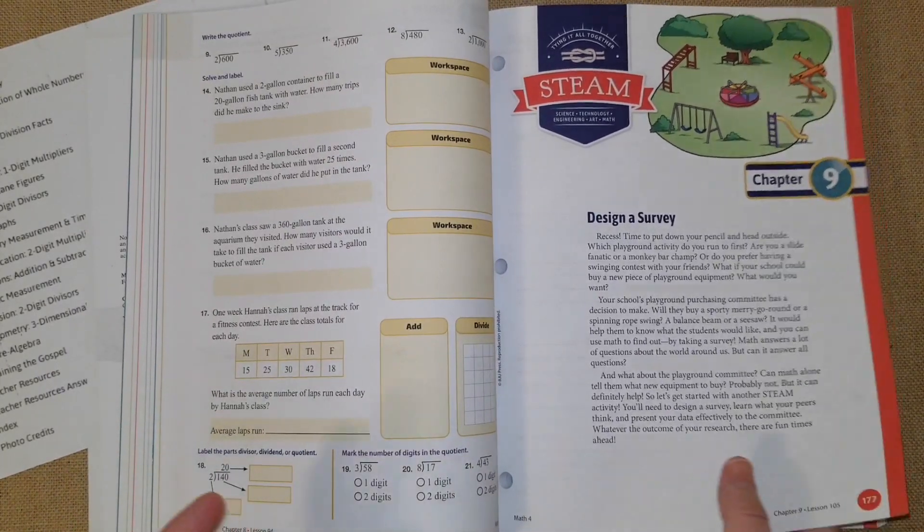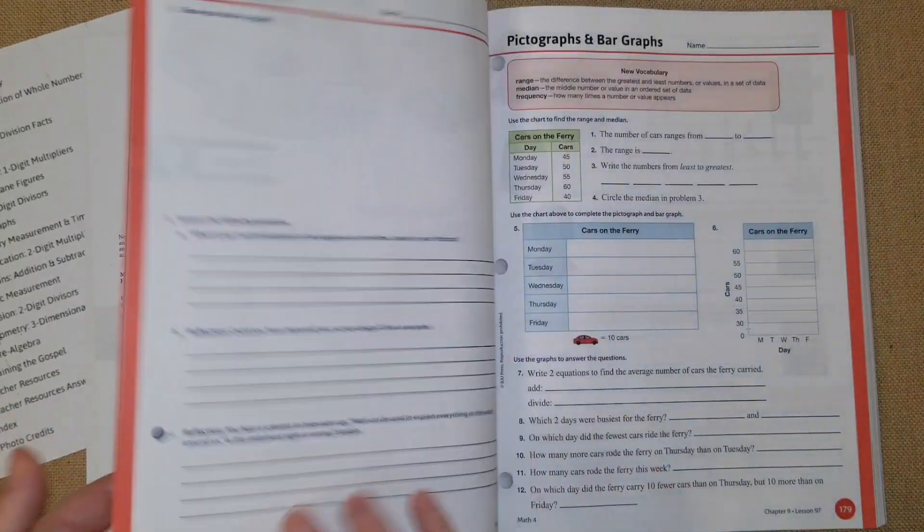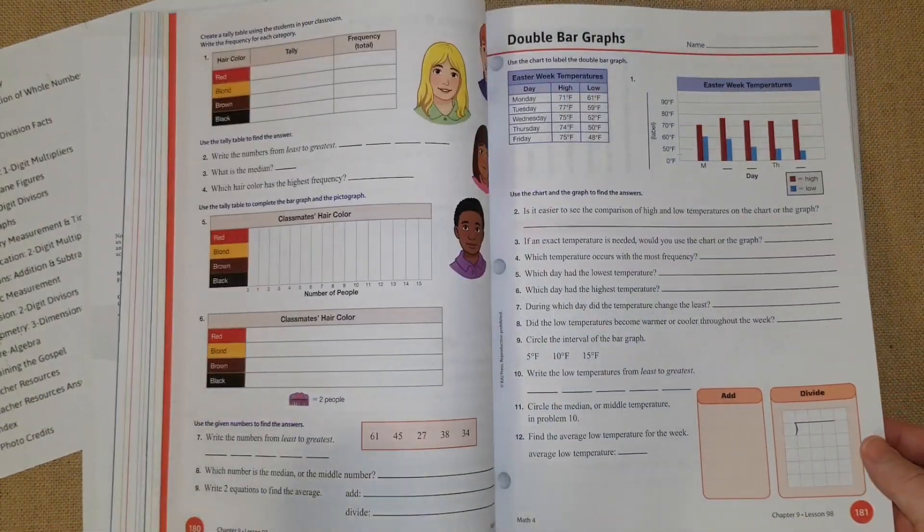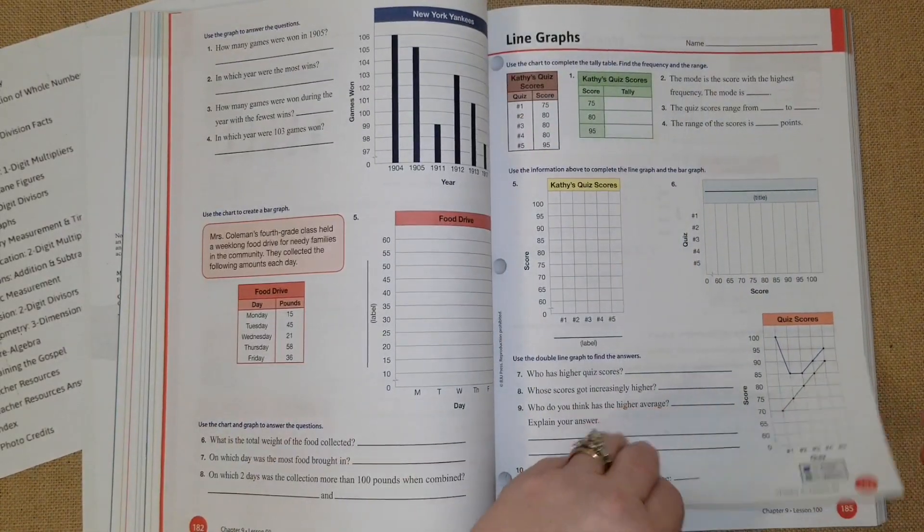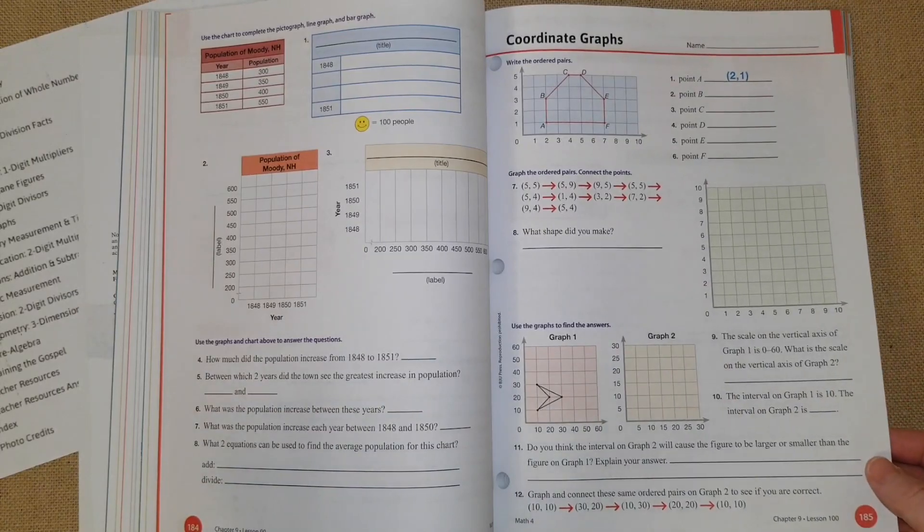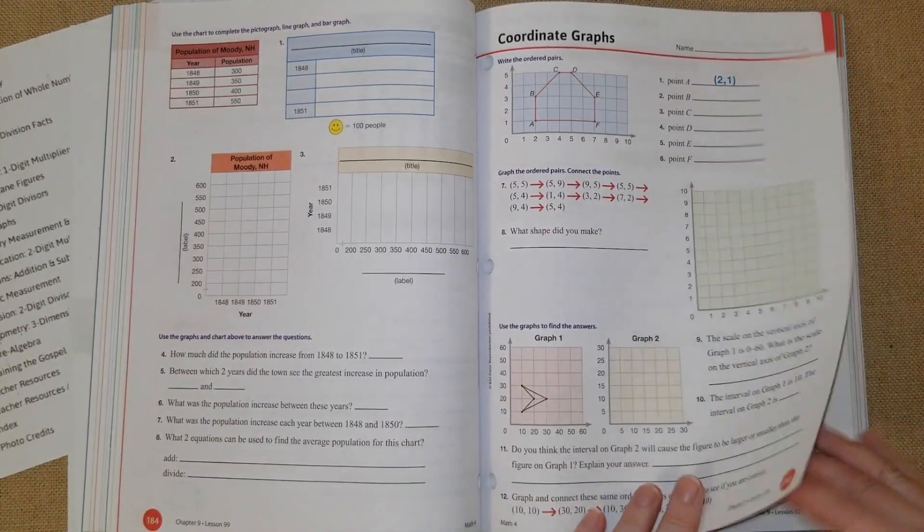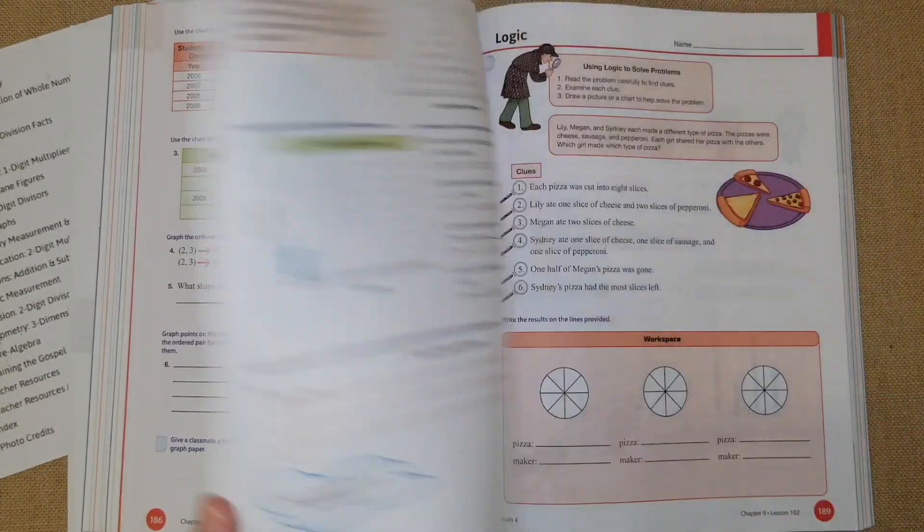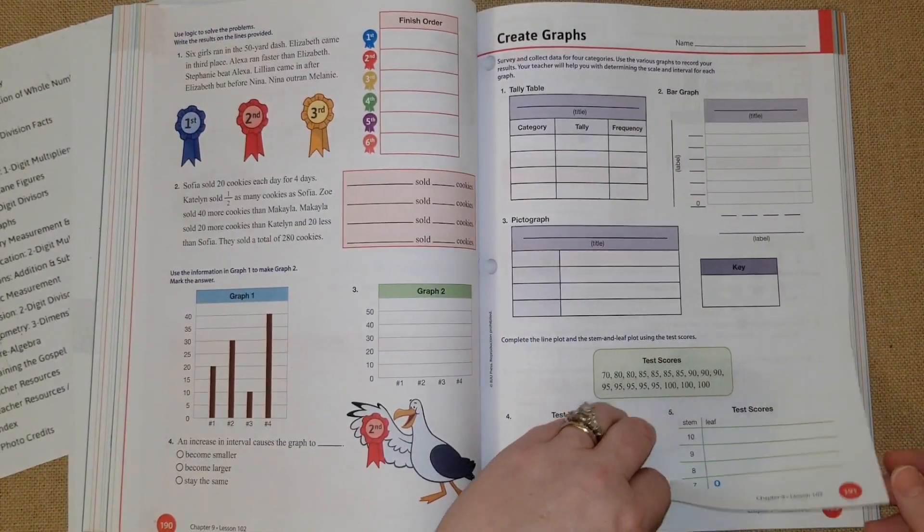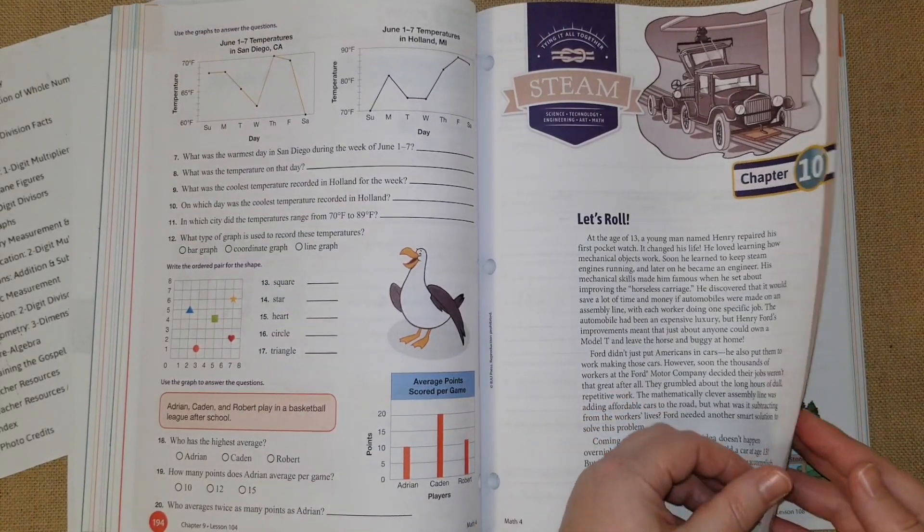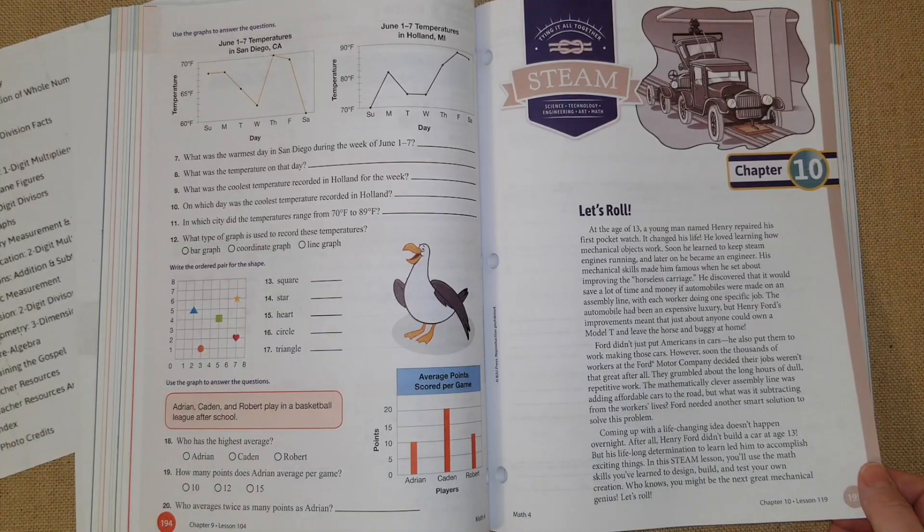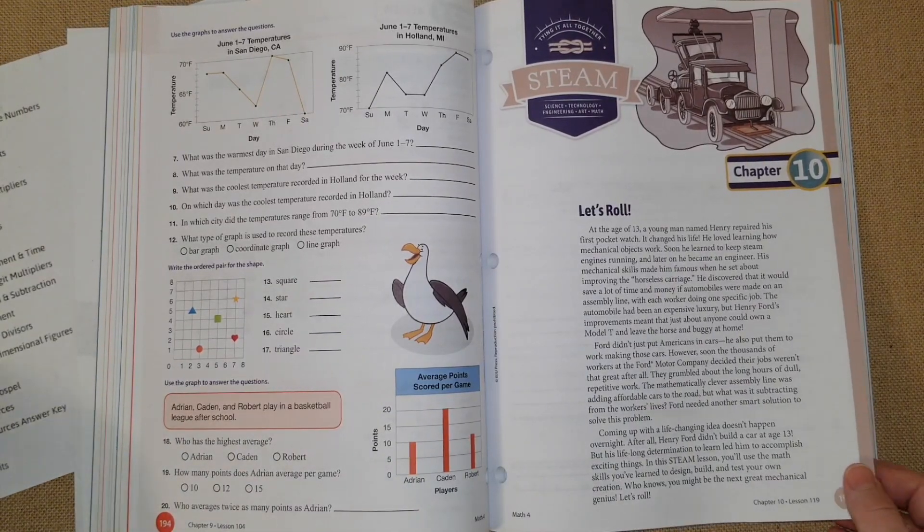Chapter nine is data and graphs. My daughter and my son, they love doing the line graphs and the bar graphs. These are a little different. This is another graph that we've not done before. Very cool. I remember doing this as a kid. So that is a fun chapter. She'll like that. She really loves those chapters. It gives them a little break from division and multiplication.